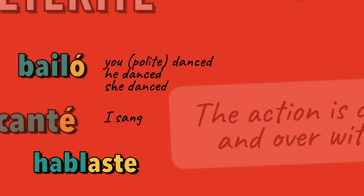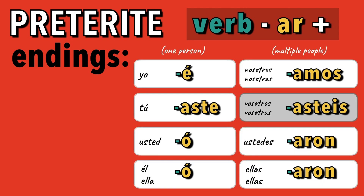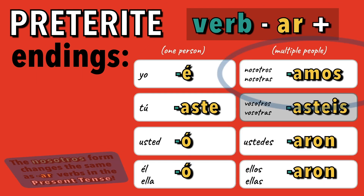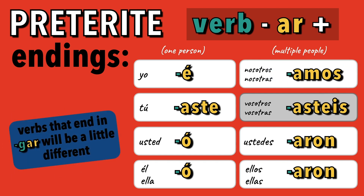To form the preterite with regular AR verbs, take the verb, remove the AR, and add the following endings. Notice the nosotros form is the same as the present tense, but verbs ending with G-A-R will have an additional change in the preterite.